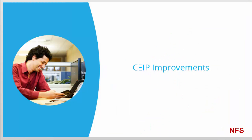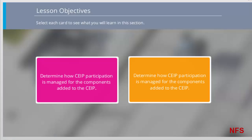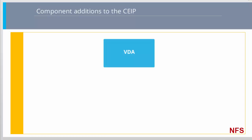The Citrix Customer Experience Improvement Program (CEIP) is designed to improve the quality and performance of Citrix products through the analysis of anonymous statistics and usage information collected by certain Citrix products and components. Now, additional components can participate in the CEIP. New to this release, the VDA component can participate in the program, and you are now automatically enrolled in the CEIP when you install a Windows VDA.